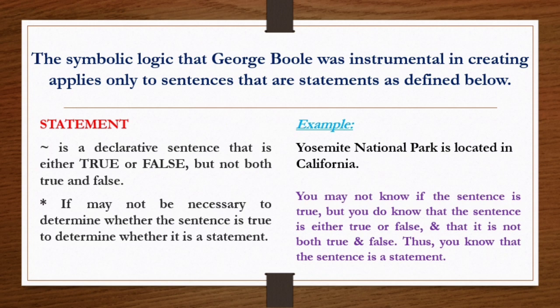Here is an example: 'Yosemite National Park is located in California.' At first, you may not know if the sentence is true, but you do know that the sentence is either true or false, and that it is not both true and false. Thus, you know that the sentence is a statement. We know from the example that it could be true — that it is indeed in California — or not. What a logic statement answers is whether it is true or false.